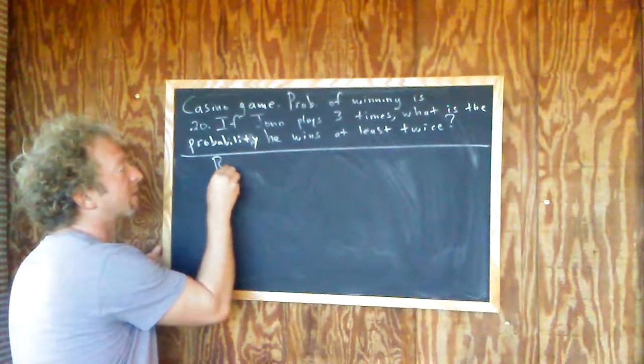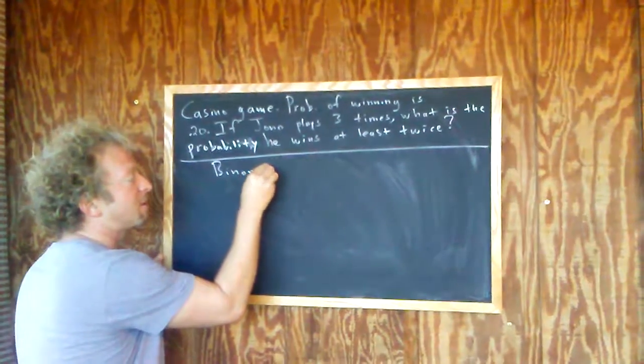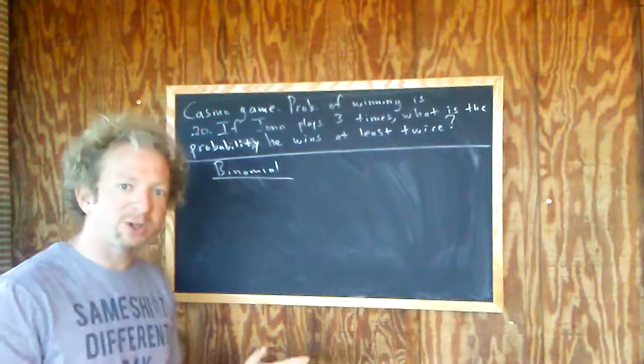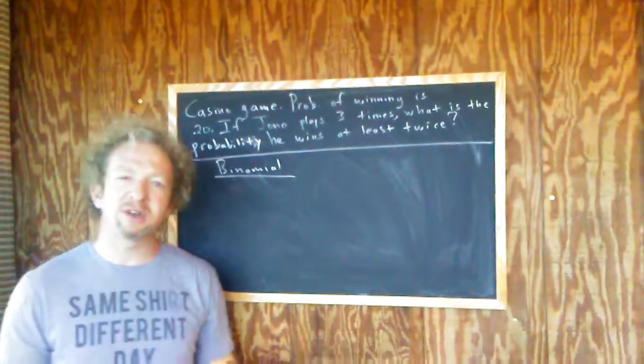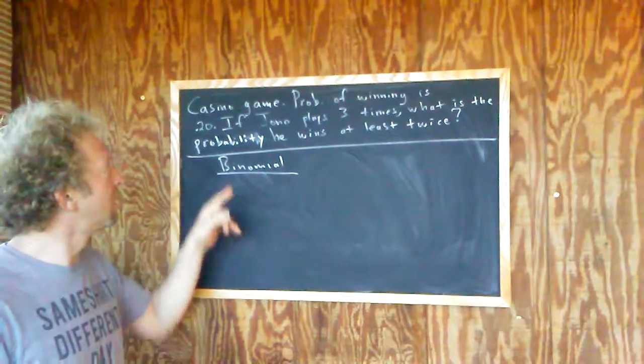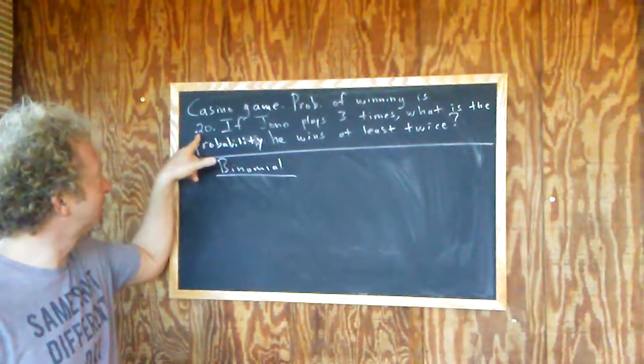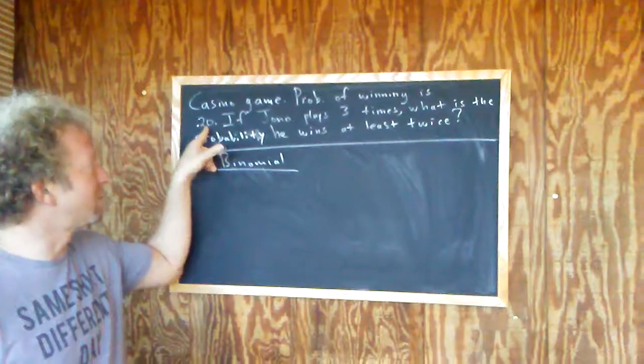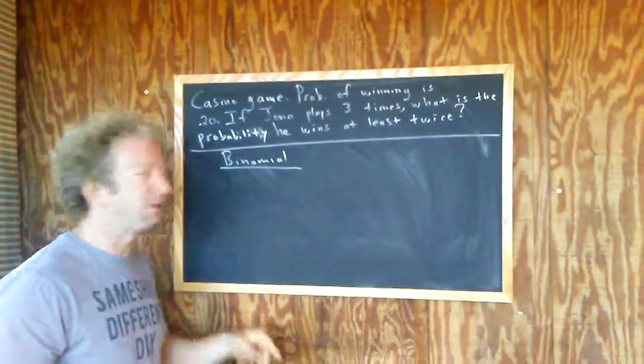So you know that this is binomial, and the reason you know it's binomial is because you have two possible outcomes, right? In this game, Jono is either a winner or a loser. Also, you have your probability of success, which is 0.20. So you have two possible outcomes, usually it's going to be binomial.